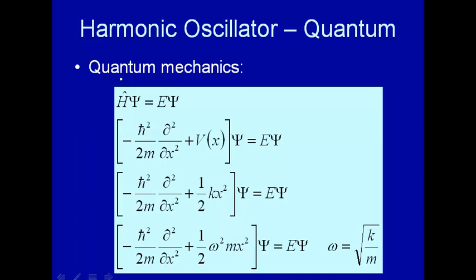The Hamiltonian is total energy: kinetic energy plus potential energy. The kinetic energy we've used quite a bit so far. That is just -ℏ²/2m times the second derivative with respect to some spatial coordinate or coordinates.